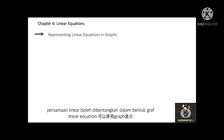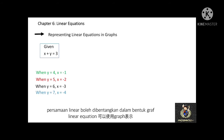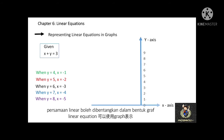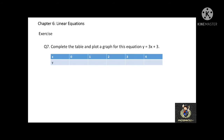We can also represent a linear equation on a graph. For example, x plus y equal to 3. First, plot your x and y-axis. Then, calculate the value of x one by one. For example, when y equal to 4, substitute y equal to 4 into the equation x plus y equal to 3, which results in x equal to negative 1. Similarly, when y equals 5, 6, 7, or 8, substituting these y values into the equation results in x equal to negative 2, negative 3, negative 4, and negative 5 respectively.